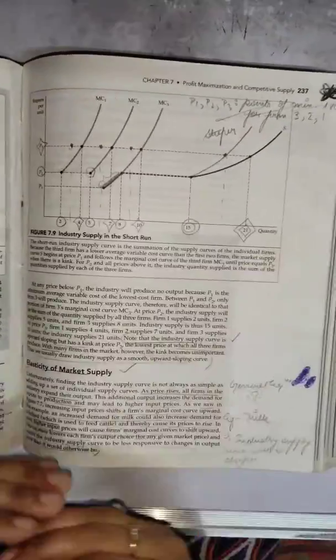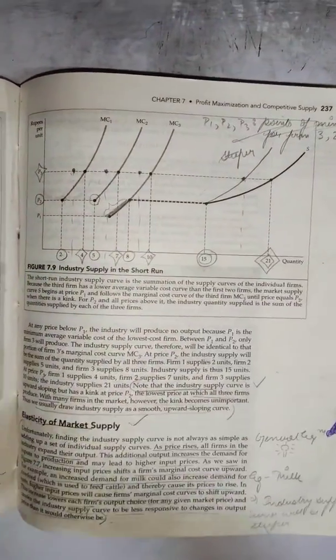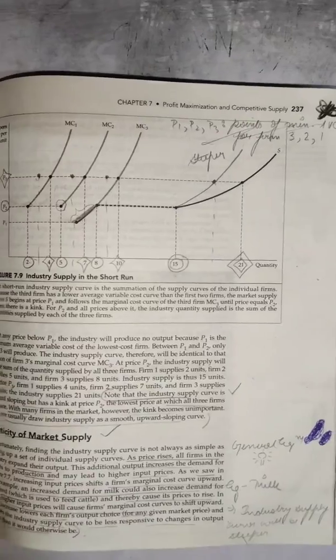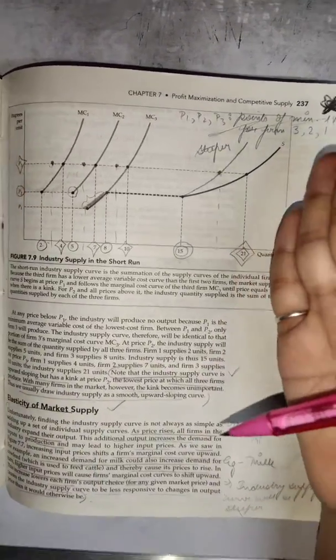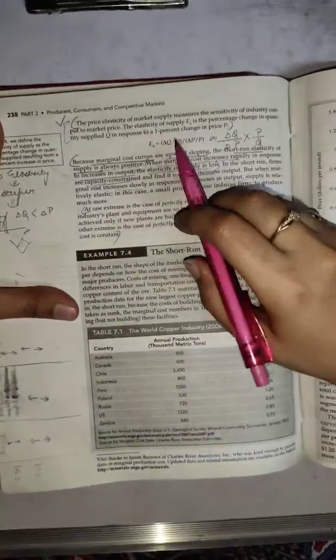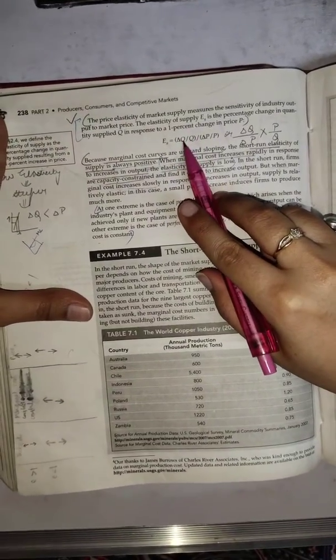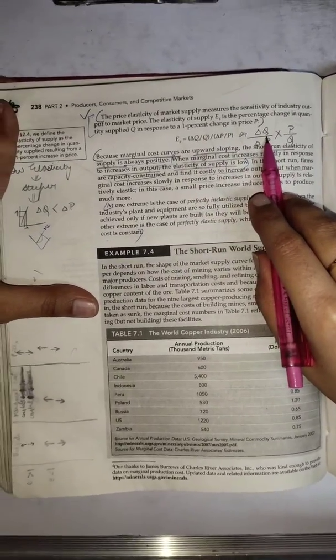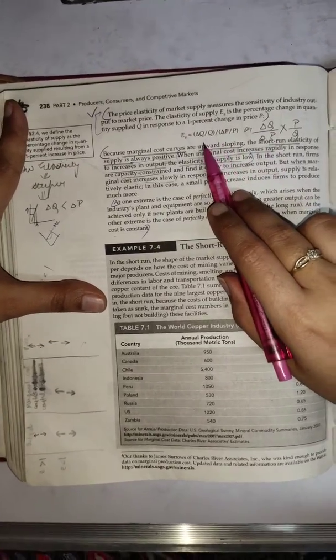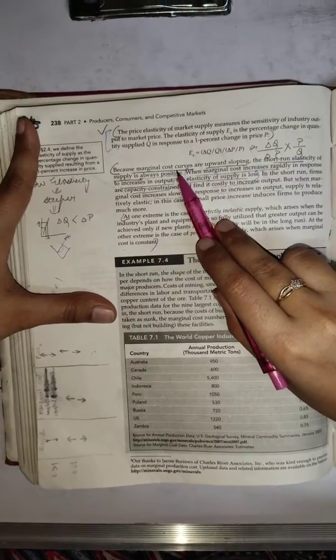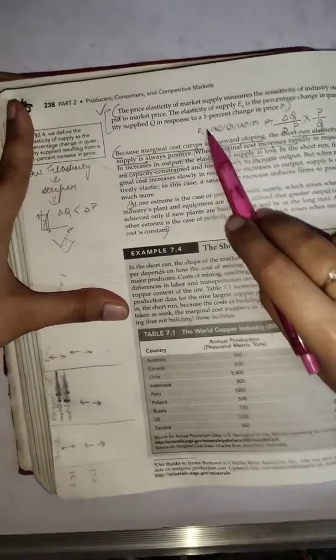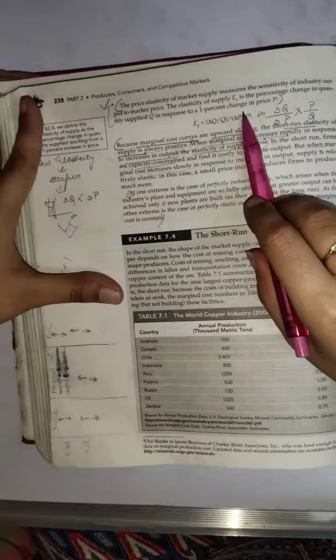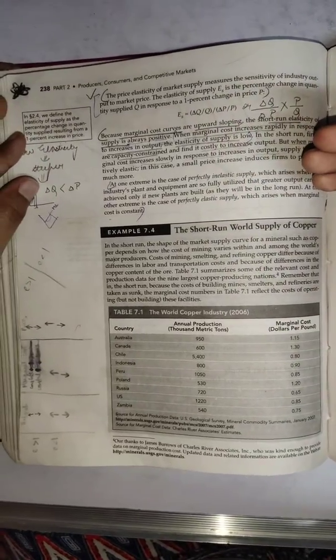We clearly saw that increasing input prices shift a firm's marginal cost upward and those result in lower quantities. And these reduced quantities can make your market supply curve less responsive. Let's consider elasticity in general. We all know the elasticity formula is percentage change in quantity due to 1% change in price. The formula is delta Q upon Q in numerator and then in denominator you have delta P upon P. That was about my price elasticity of supply in the market formula which tells you the sensitivity of quantity to prices.